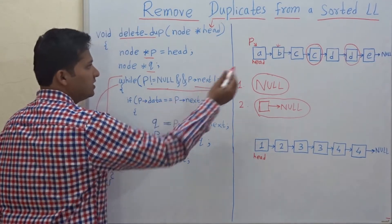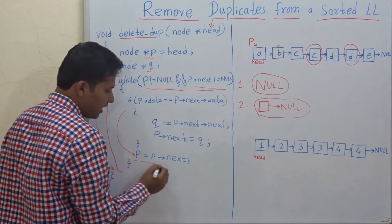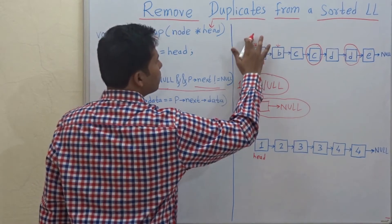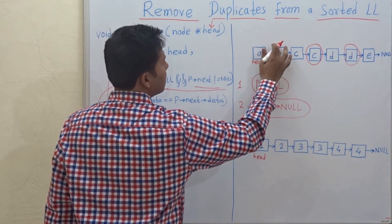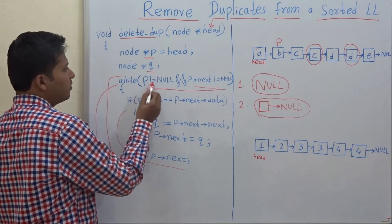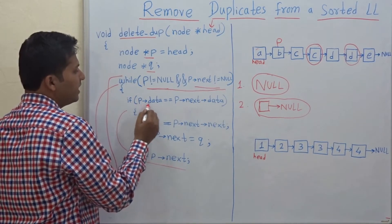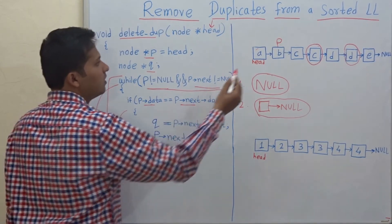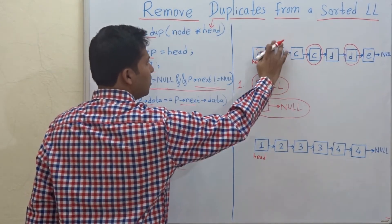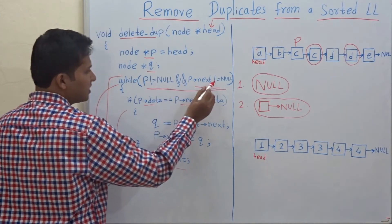In this case the consecutive nodes are not the same, so we don't go inside the if. We go to the line P = P->next and move P forward. Now we check the while loop again — P is not null, P->next is not null. We check the if condition: is P->data equal to the next node's data? No, so we move P ahead again. Now the while condition is satisfied again — go inside. Now P->data equals C, and the next node's data is also C — they are equal.